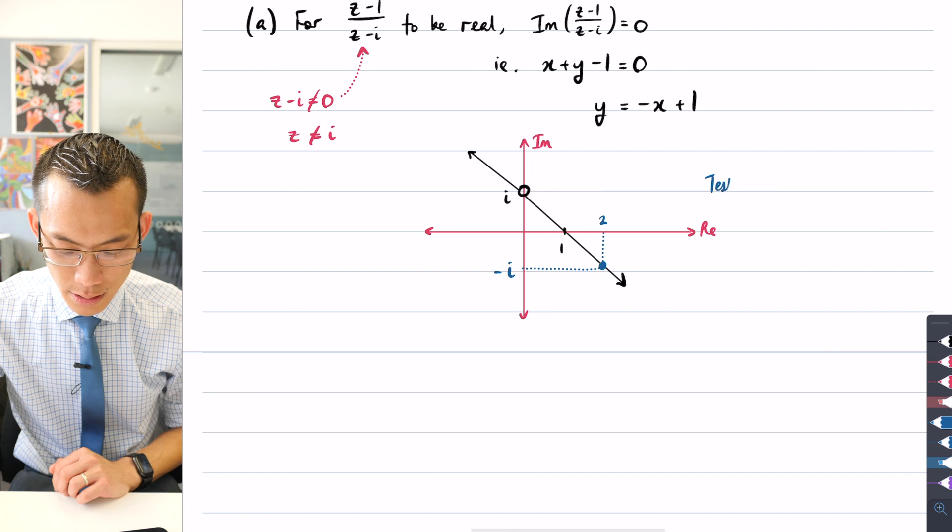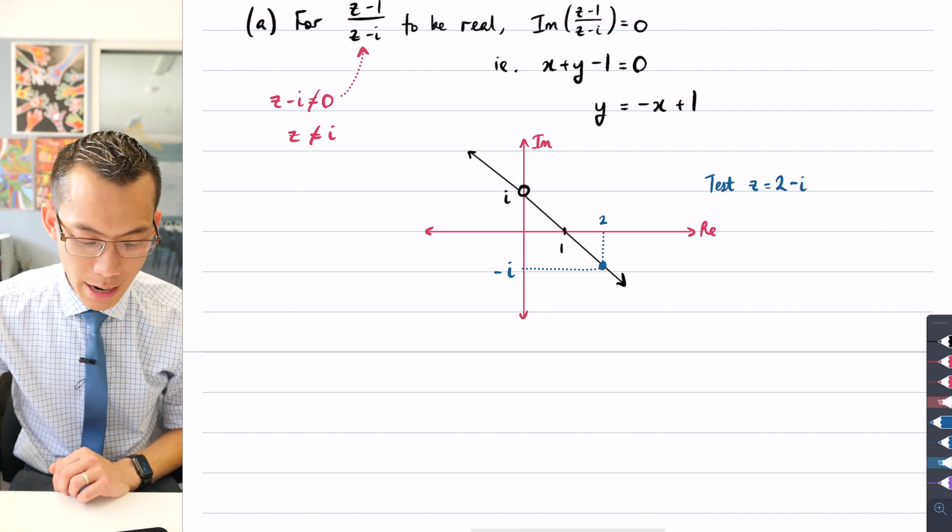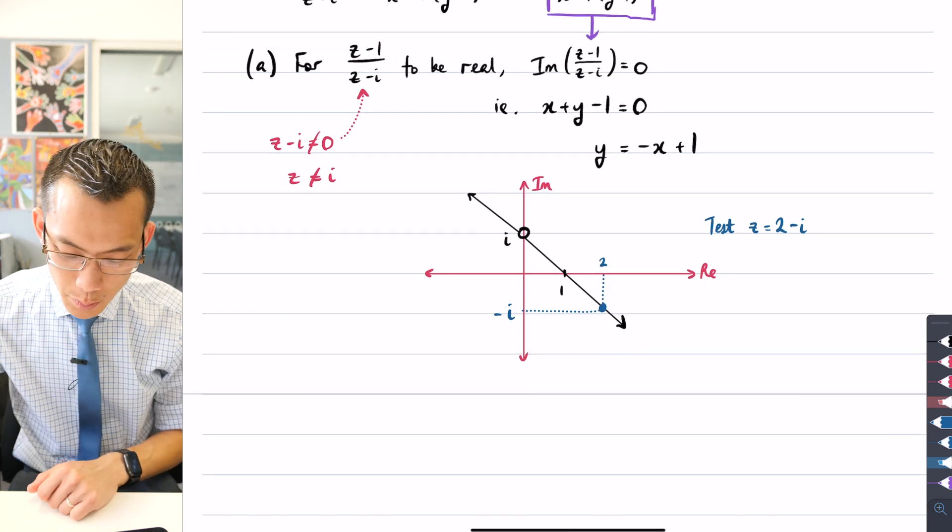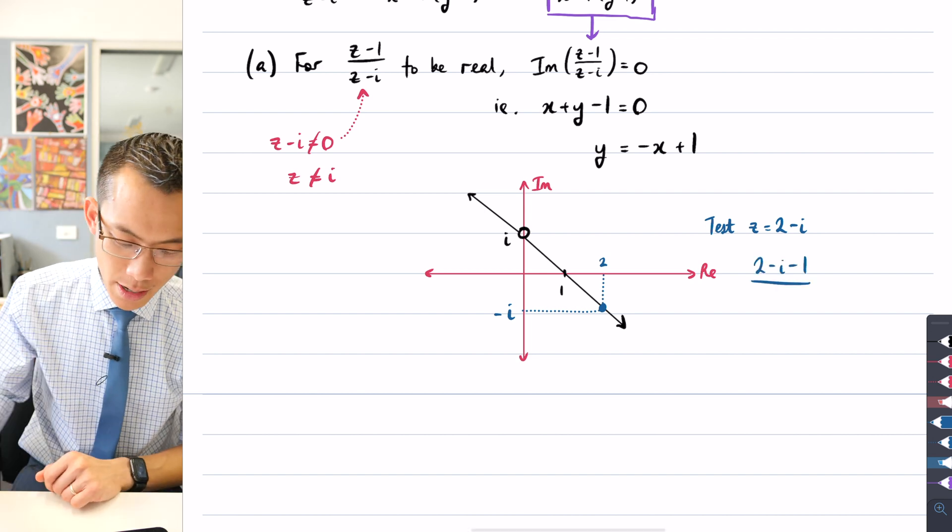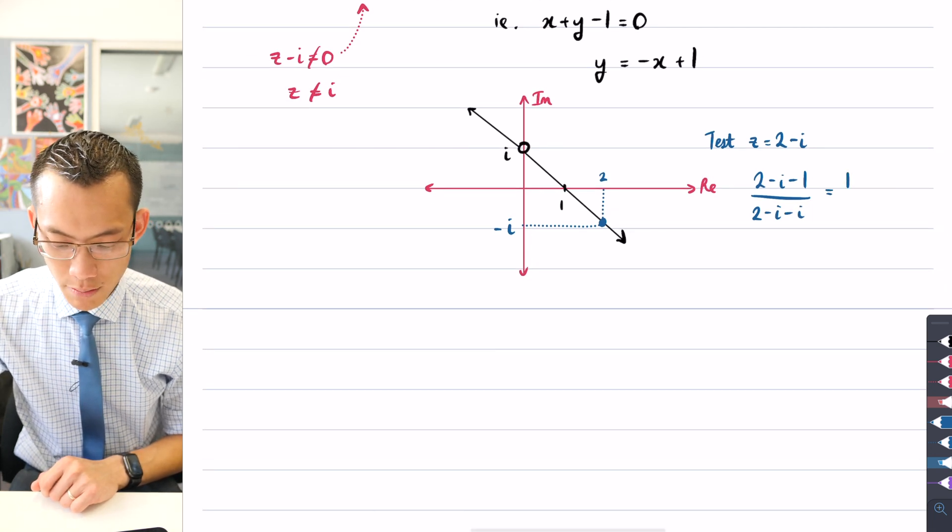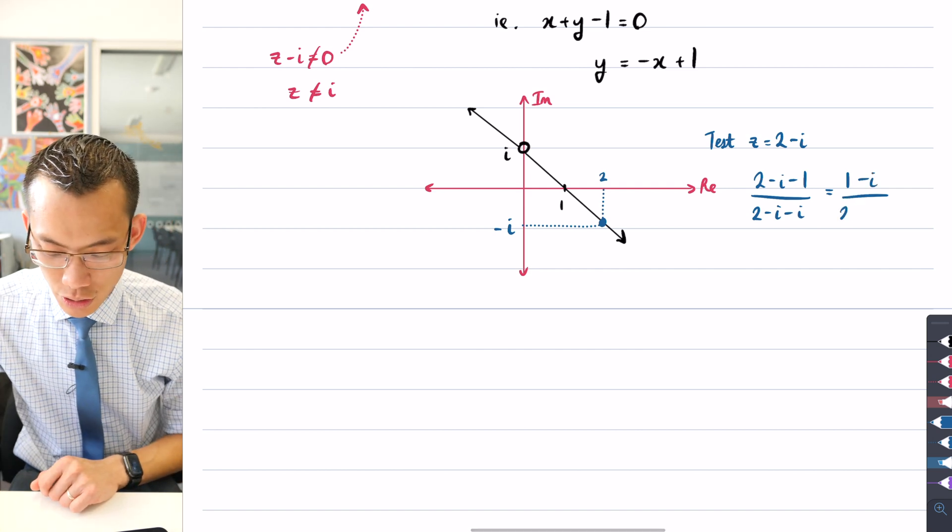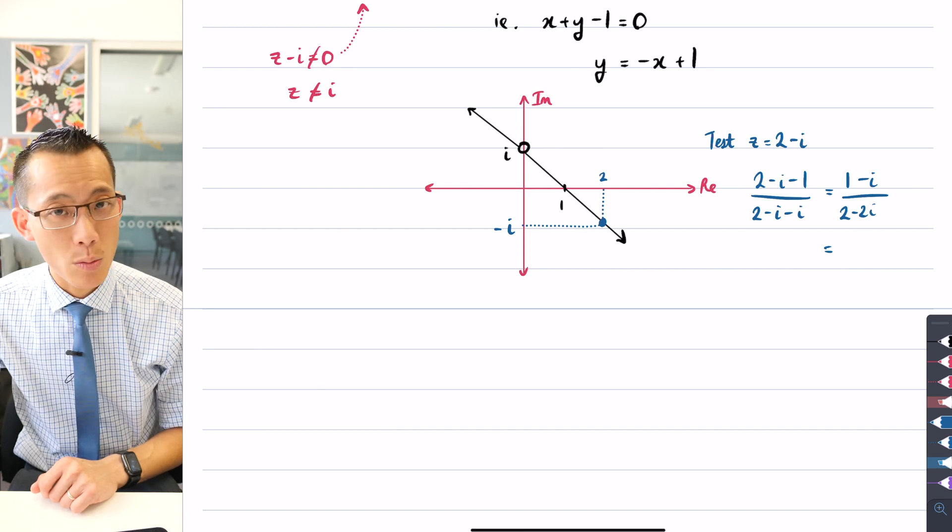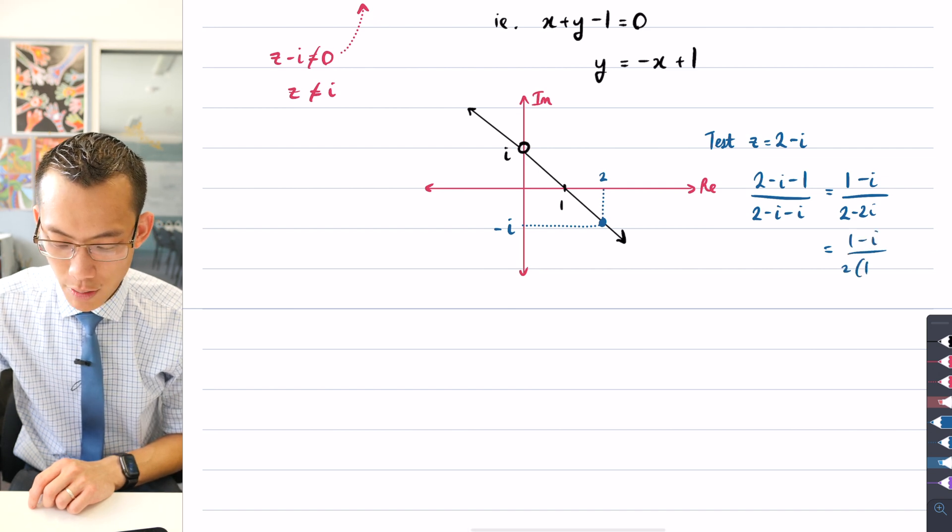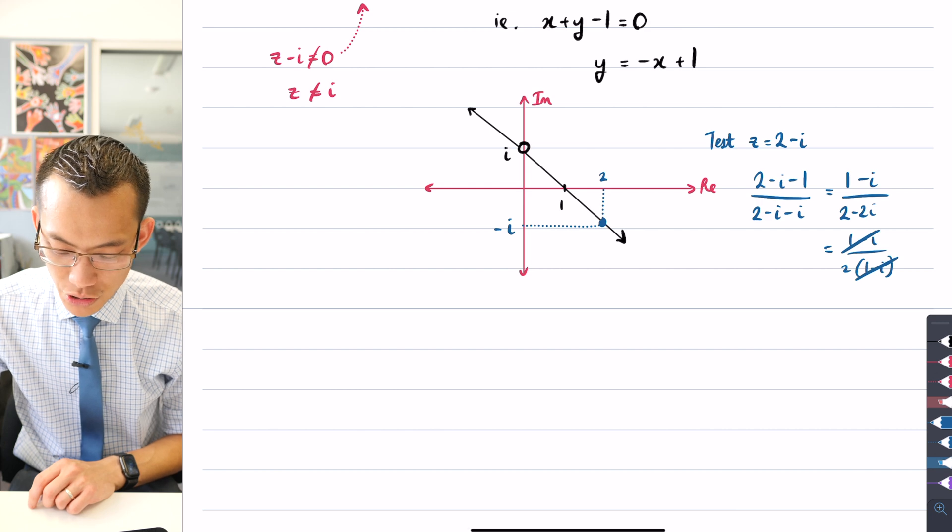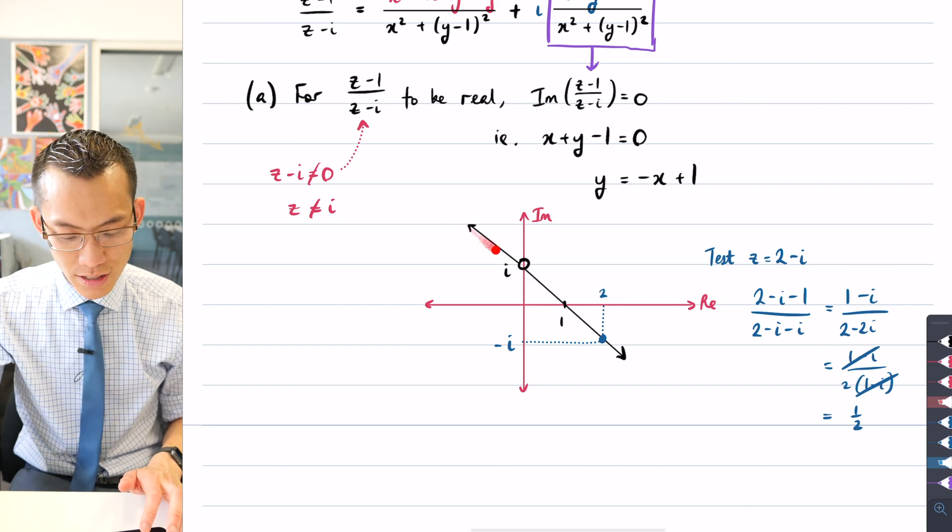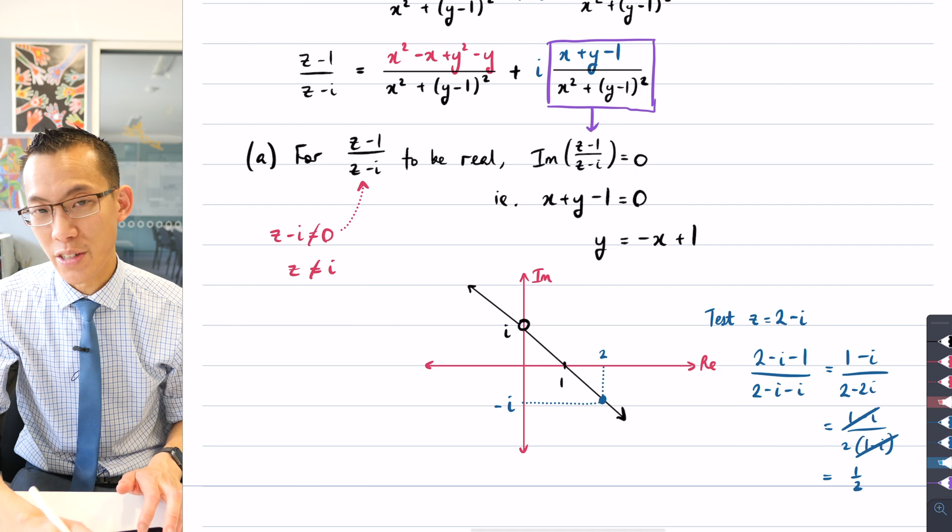So if we test z equals 2 minus i, I'm going to pop it into this z minus 1 over z minus i. I'm going to get 2 minus i minus 1 divided by 2 minus i minus i. 2 minus 1 gives you 1, there's no other i's on the numerator. On the denominator, you get 2 minus 2i, and you can factorize out 2 times 1 minus i. So cancel, we just get a half, which is indeed a real number. You can check anywhere else along this line, so long as you don't include i.